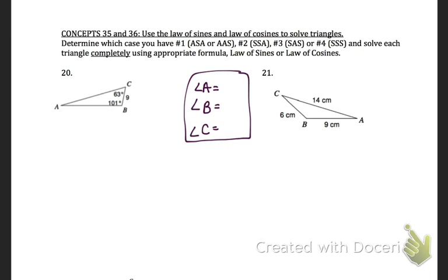For problem 21, we have the side-side-side case, so we're going to use law of cosines. I have all three sides and I'm going to solve for the angles. Let's start with angle A using the corresponding law of cosines equation, then plug in sides B, C, and A.